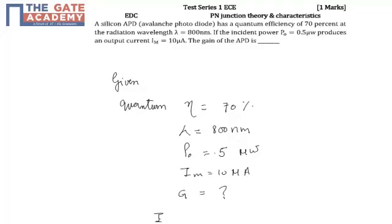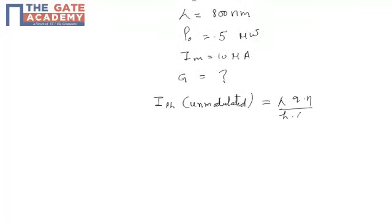I know that photocurrent unmodulated is given by lambda q eta over hc.